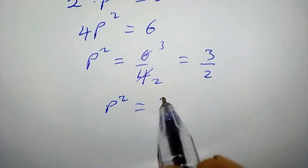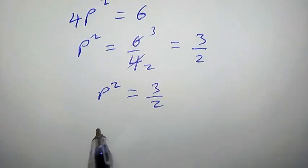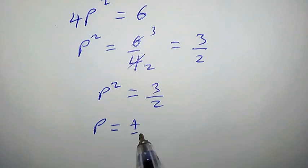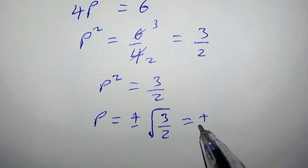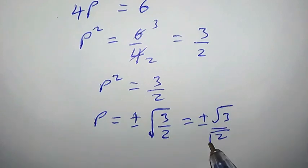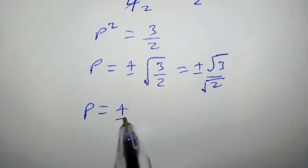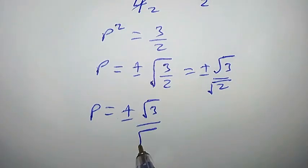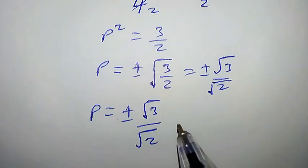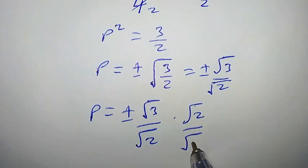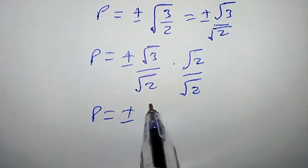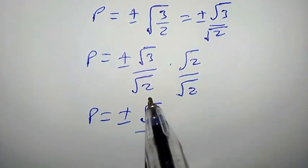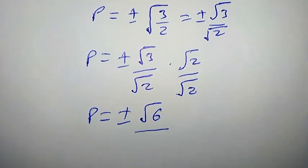P squared equals 3 over 2. Taking the positive square root of both sides, we have P equals plus or minus square root of 3 over 2, which is plus or minus square root of 3 over square root of 2. Rationalizing by multiplying numerator and denominator by square root of 2, P equals plus or minus square root of 6 over 2.